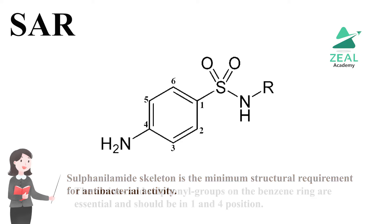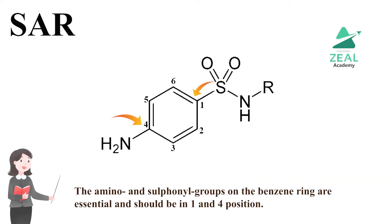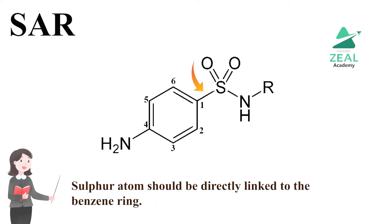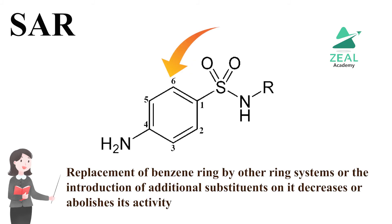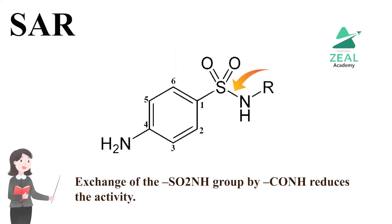In the structure-activity relationship of sulfonamides, the amino and sulfonyl groups on the benzene ring are essential and should be in the one and four positions. The sulfur atom should be directly linked to the benzene ring. Replacement of the benzene ring by other ring systems, or introduction of additional substituents on it, decreases or abolishes activity. Exchange of the SO₂NH group by CONH also reduces the activity.